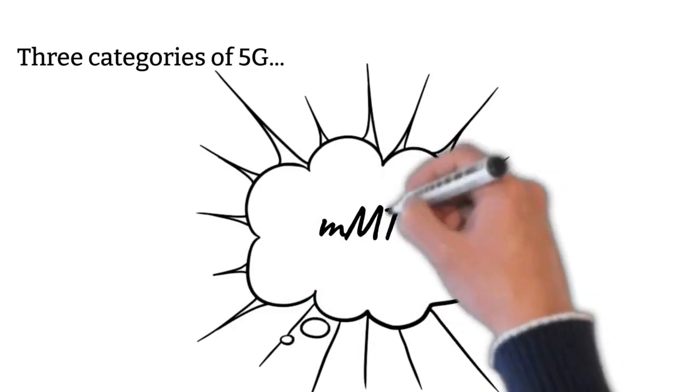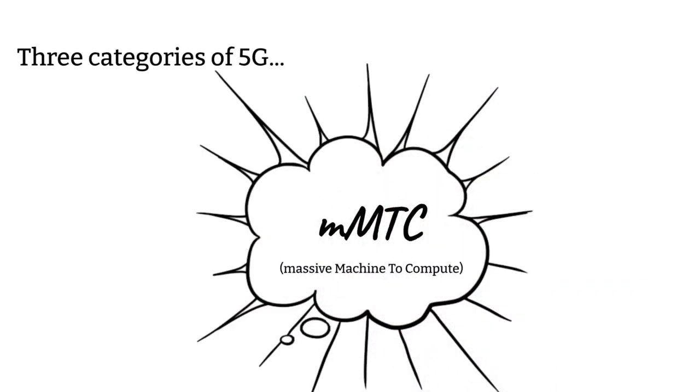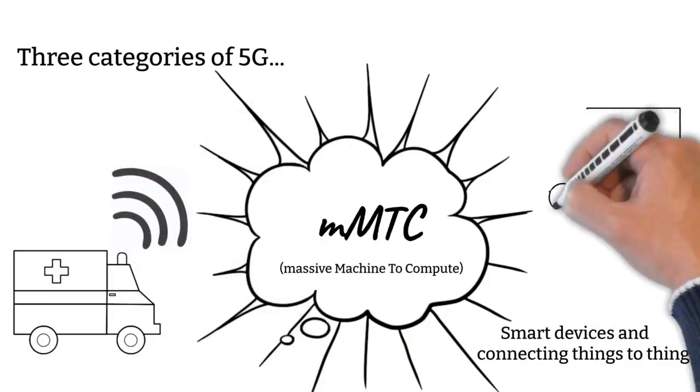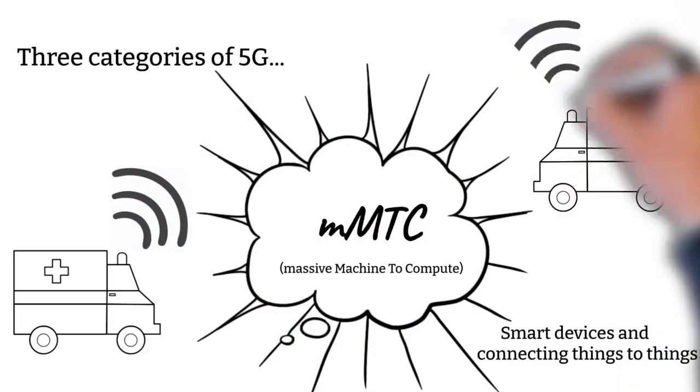MMTC stands for Massive Machine to Compute. MMTC connects things to things. For example, autonomous vehicles will soon be able to connect and communicate to one another using 5G.